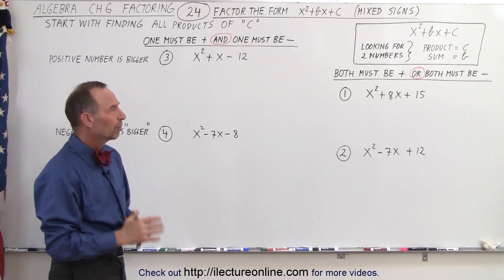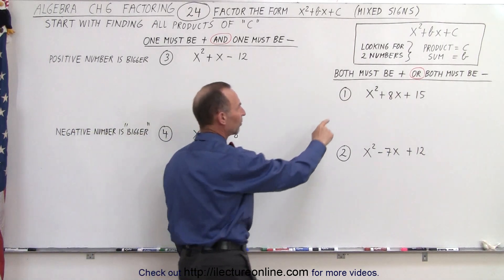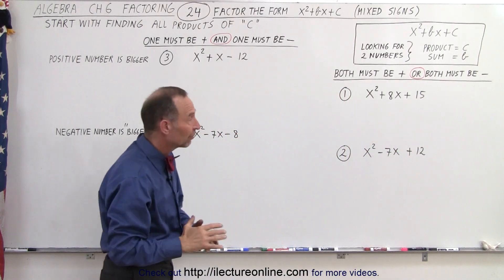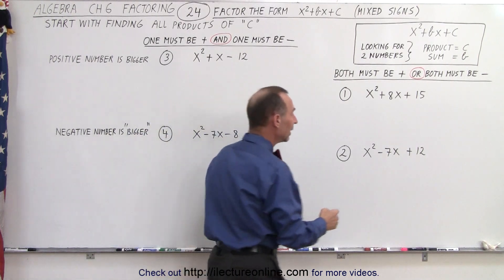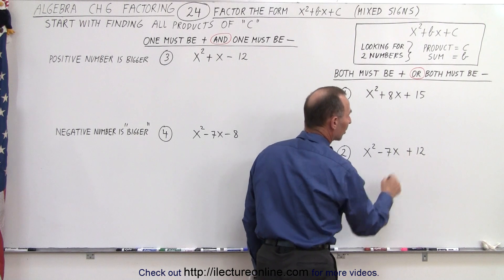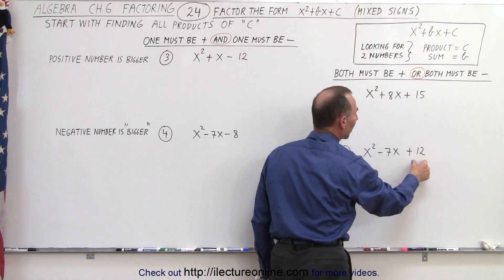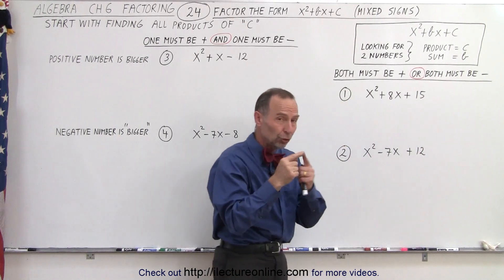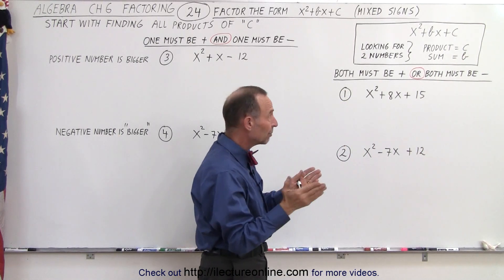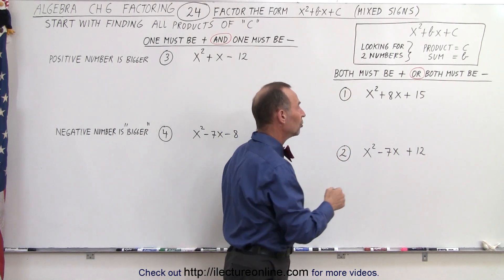There are four possibilities. The first possibility is when they're all positives, and that's the one we covered in the previous video. The second possibility is that the middle term is negative and the third term is positive. In either case, notice that the third term is positive, so when we multiply two numbers together and get a positive result, that means both numbers must either be positive or they must be negative. That's case one and case two.